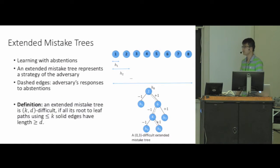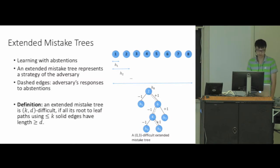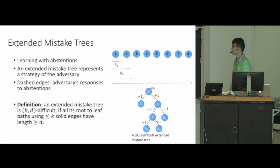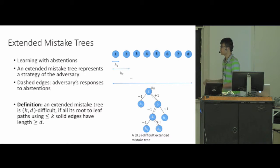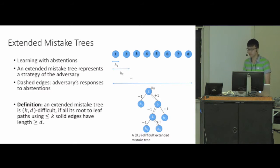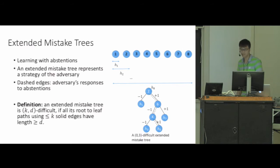Inspired by this notion, we developed a concept called the extended mistake tree to deal with the online learning with abstention setting. The extended mistake tree represents a strategy of the adversary. The difference is that it is no longer a complete binary tree but a full binary tree. For each internal node it has solid downward edges as before, but also dashed edges corresponding to the adversary's responses when the learner predicts abstention. We develop a notion called kd-difficulty: any root-to-leaf path using at most k solid edges has length at least d.